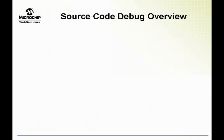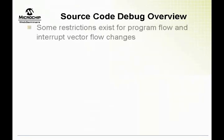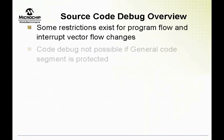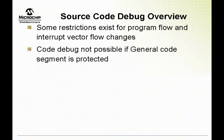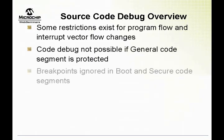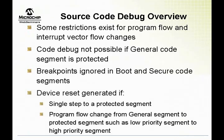Source Code Debug Overview. Let's take an instance of a developer using ICD2 in-circuit debugger to debug code in a device which has a boot segment, a secure segment configured and protected. Let's assume that the general segment has not been code protected. In this case, as the user steps through his code in the general segment, normal operation ensues and the user is able to see the instructions stepped through in the unprotected general segment.